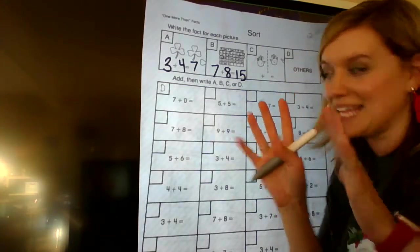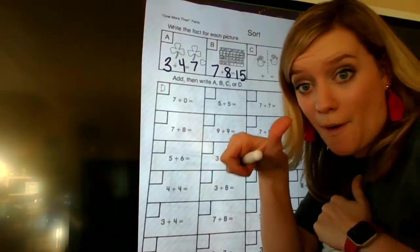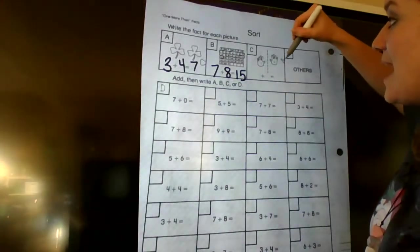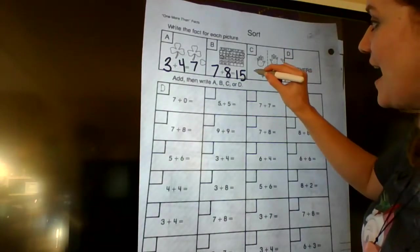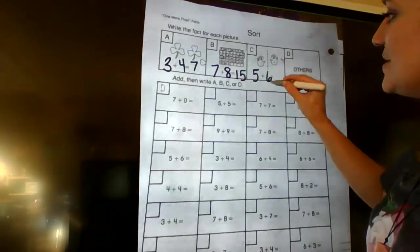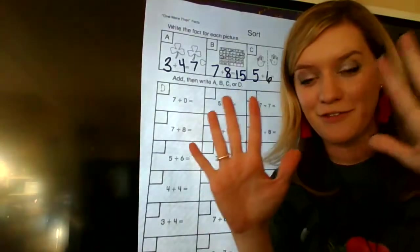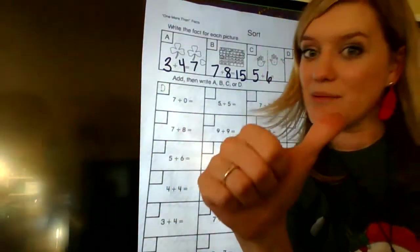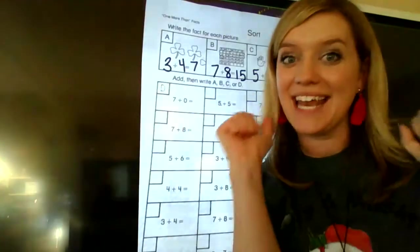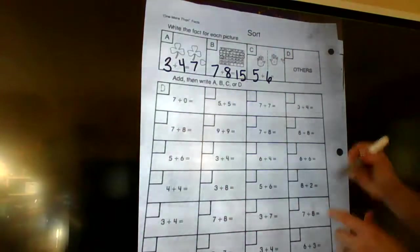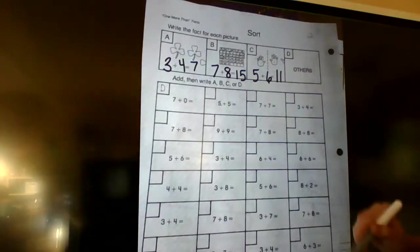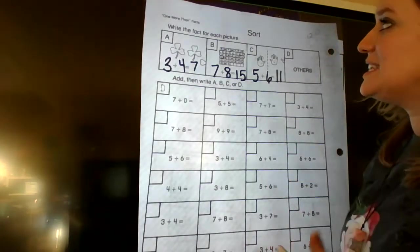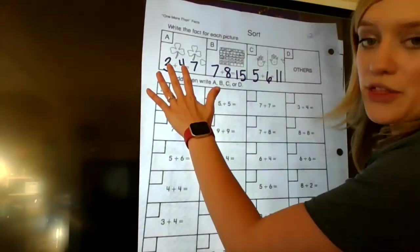Our next one is we have two hands, but then we have an extra thumb over there. So we have 5 and 5, but one more makes 6. So we have 5 plus 6. You guys know I love the double of 5 and 5. 5 and 5 makes 10. And then one more thumb. So 10, 11. Count one more up is 11. That is one more on it.